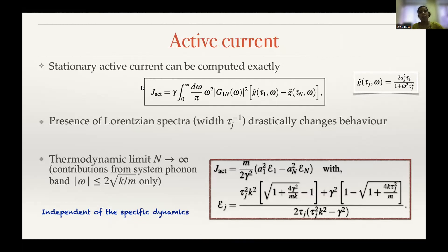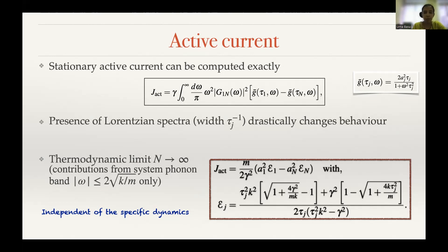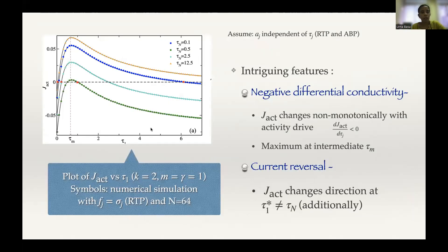We are most interested in the active part, so we set T1 equal to TN equal to zero for the rest of the talk. The active current can be expressed in a form involving a Lorentzian spectrum coming from the reservoir — specifically the difference of the spectral functions of the two reservoirs. This differs from the thermally driven case, where the spectrum is uniform. This exact form of the current in the N going to infinity limit is completely independent of the specific dynamics of the active force, so the result is robust as long as there is an exponential correlation.